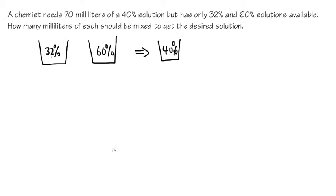What we want is the 40%, right? And notice that here we have 32% and here we have 60%. At the end, we want 40%. Do not just add the percentages together. It does not work like that. Percentages are tricky.